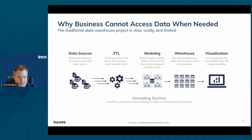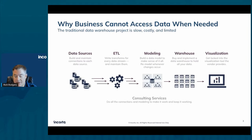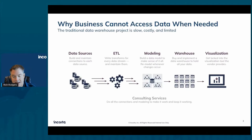To get data into a form where you can do analysis, slicing and dicing, machine learning, and predictive forecasting, you have to transform it. Not only do you have to transform it, but you oftentimes have to aggregate it, turn it into a different format — traditionally a star schema or an OLAP cube — and then put it into a warehouse to make it available to visualization tools. This is a lengthy, error-prone process.